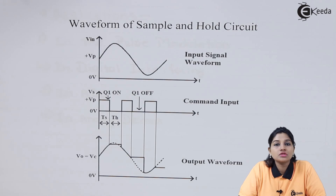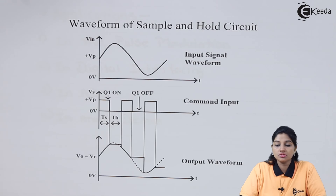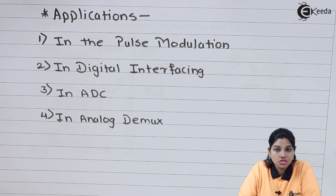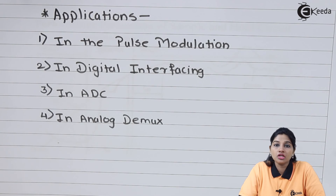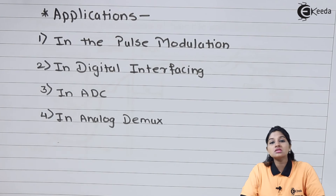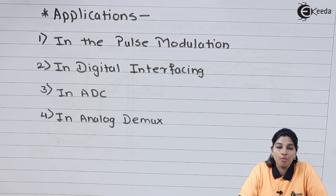There are certain applications of the sample and hold circuit. The sample and hold circuit is used in pulse modulation systems. It is used in digital interfaces. It is also used for A to D conversion — that means analog to digital conversion. Another application is that it can be used in an analog demultiplexer. These are the certain applications of sample and hold circuit using Op-Amp.